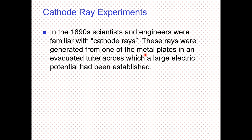A high potential difference was established across the metal plates. The potential difference generated the cathode rays. These rays were generated from the metal plates inside an evacuated tube to which a high electric potential difference was applied.